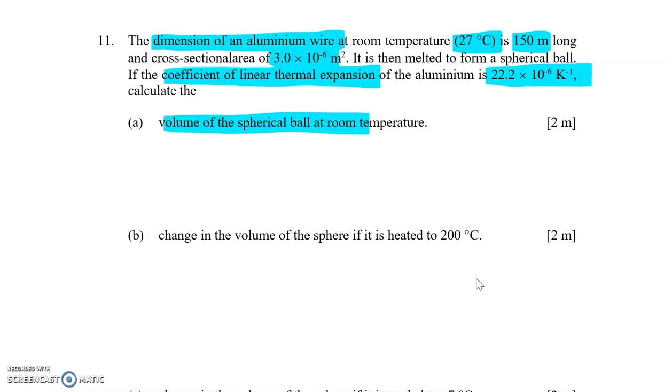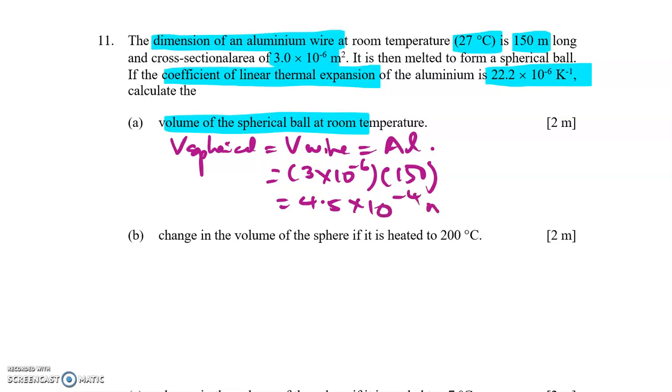So the volume of this spherical ball, we have V_sphere equal to V_wire, which equal to AL. The cross-sectional area is given, so 3×10^-6, and L is 150, so you have 4.5×10^-4 meter cube. So here you've got 2 marks for substitution and for answer with unit.